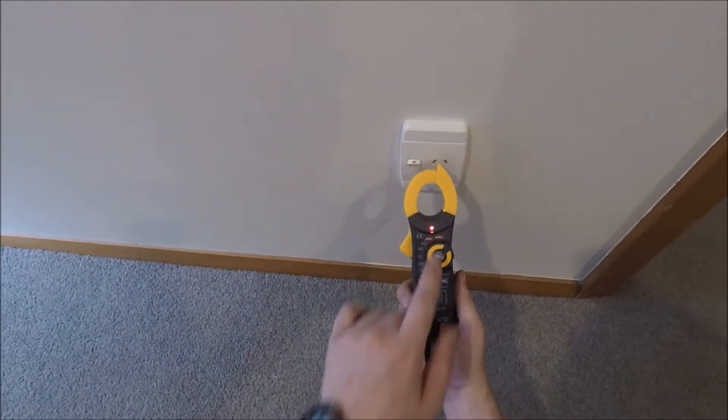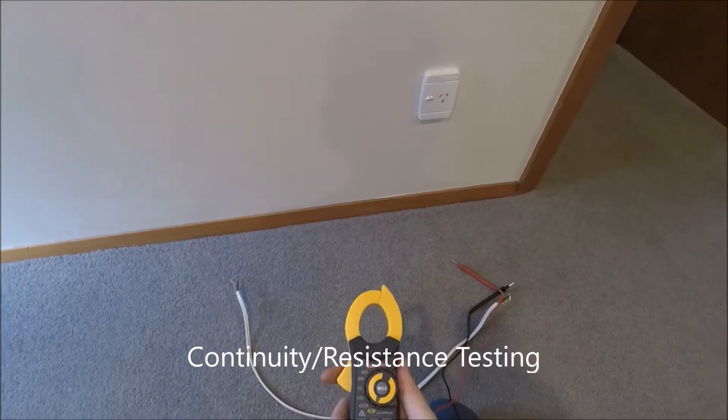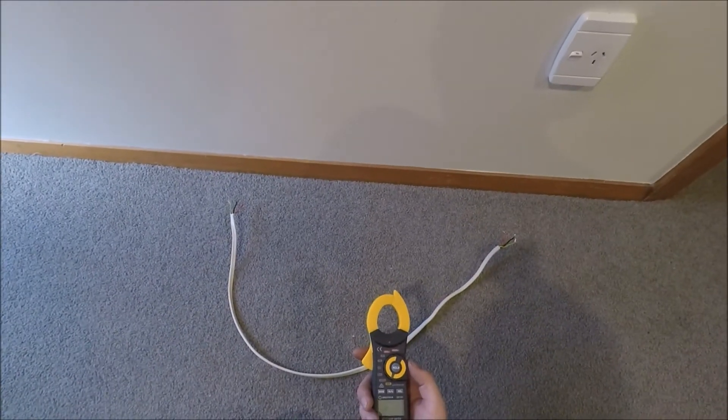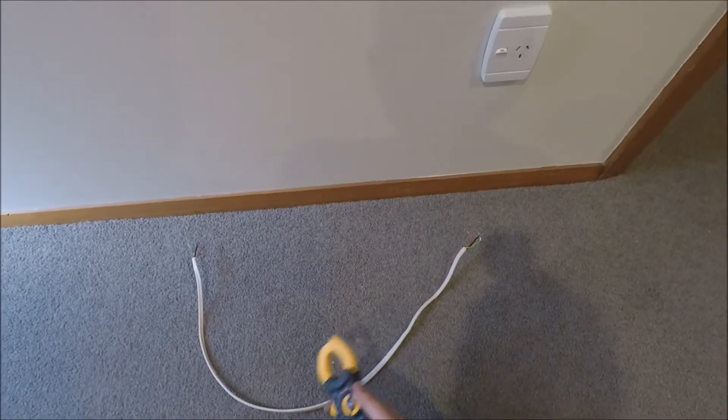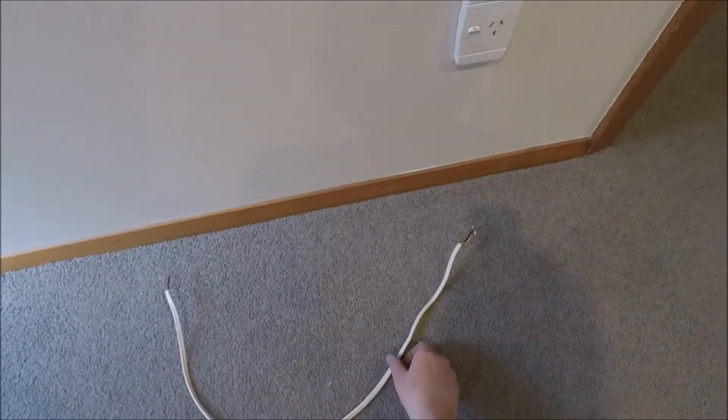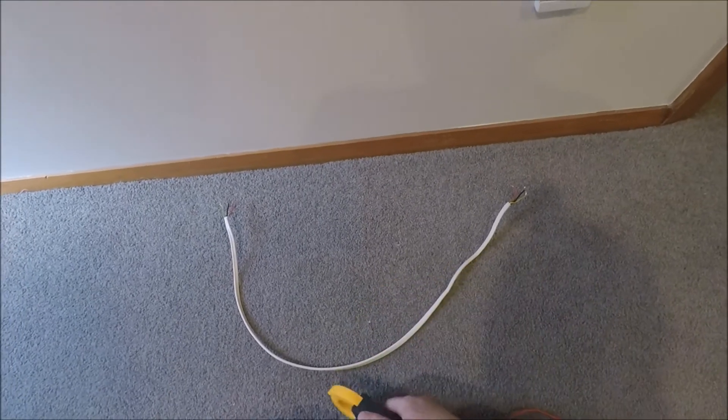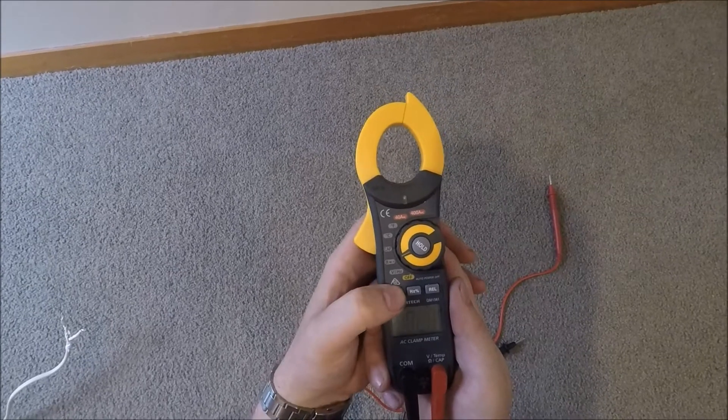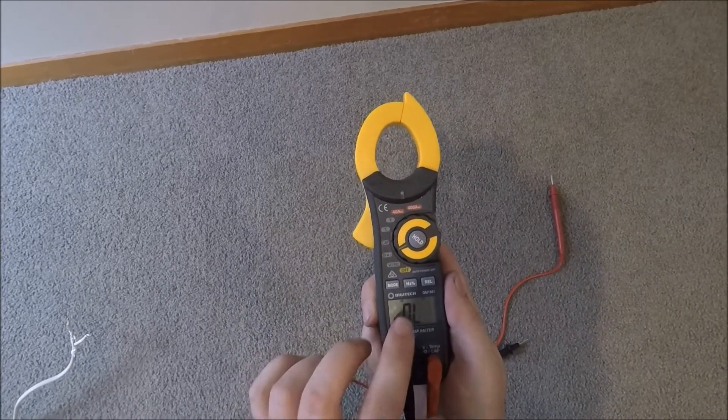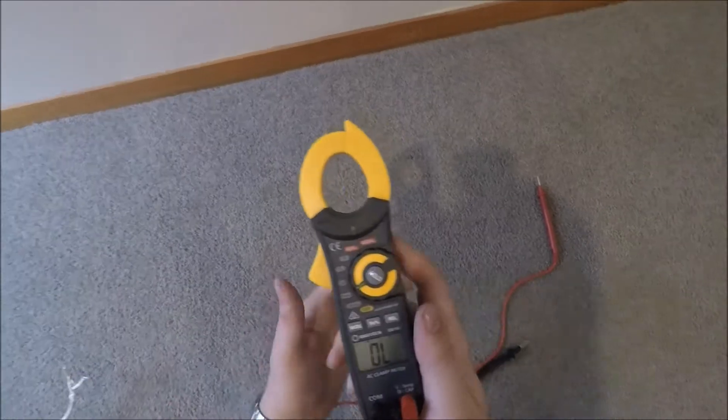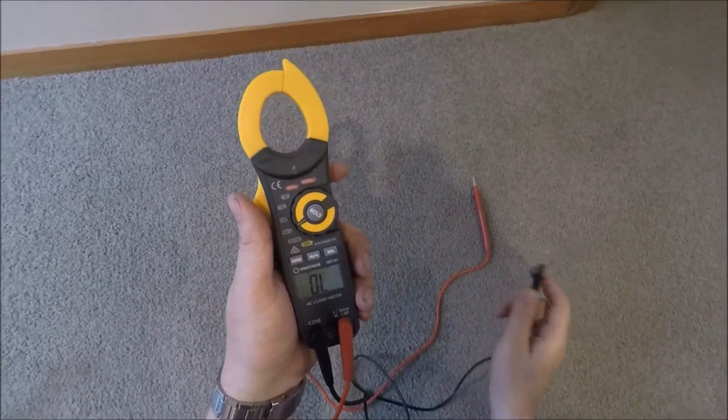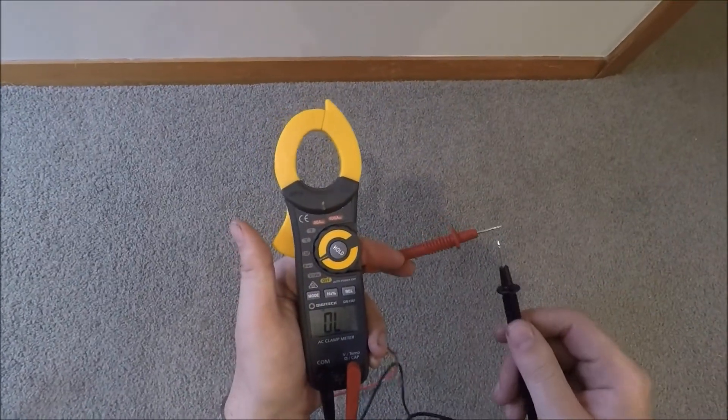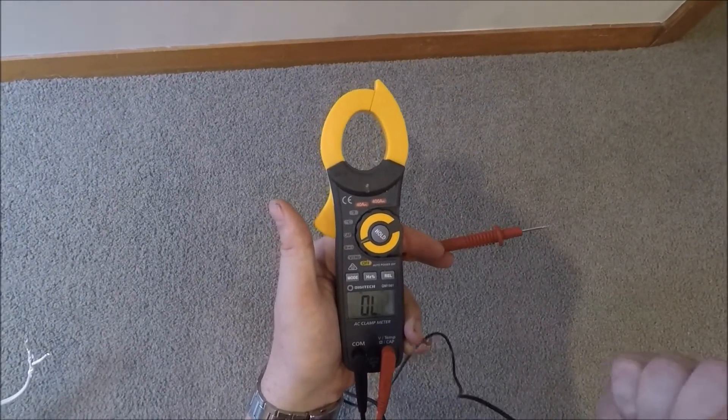I'm going to quickly run through continuity. What we use continuity for is finding cables that we don't know where they go, and we can trace them anywhere, providing the cable goes back through other power points or through the switchboard. If we put it on ohms, just the mode button on here, it'll have that little sound icon. That means now when it picks up continuity, when a circuit is closed or complete, it'll make a beep.